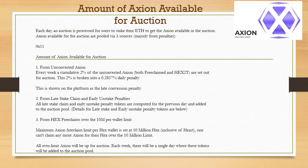Details for late stake and early unstake penalty tokens are covered below. Source 3: from HEX free claims over the 10 million HEX wallet limit. The maximum Axion free claim limit per HEX wallet is set at 10 million HEX, inclusive of HEARTS. Any wallet cannot claim Axion for HEX over the 10 million limit — all over-limit Axion will be up for auction. Each week, there will be a single day where these tokens will be added to the auction pool.